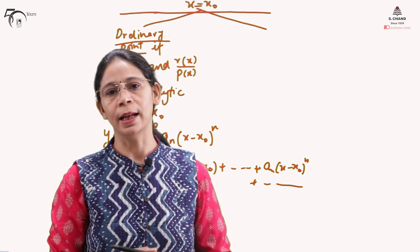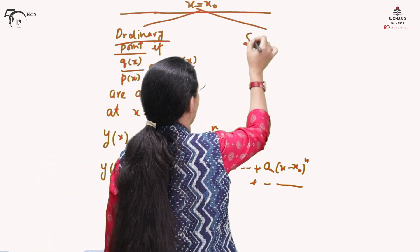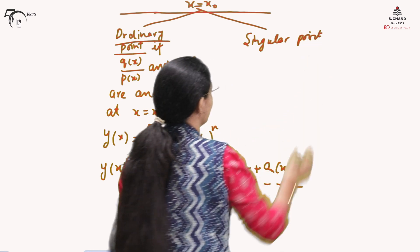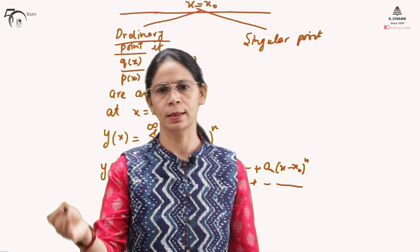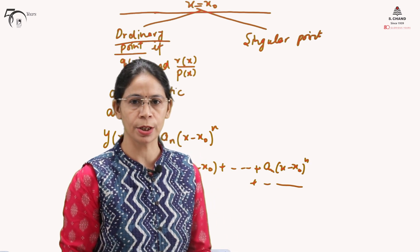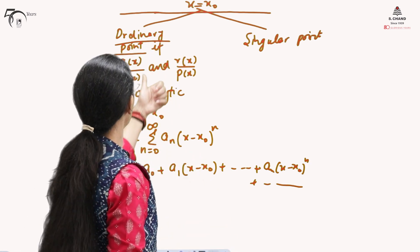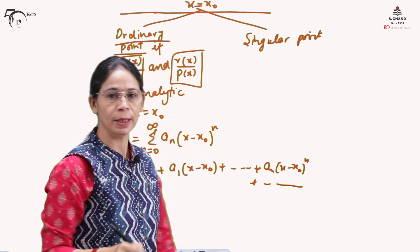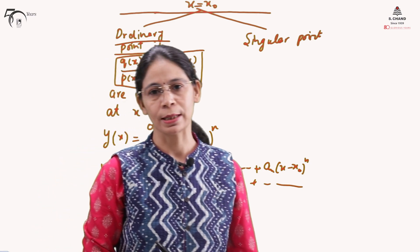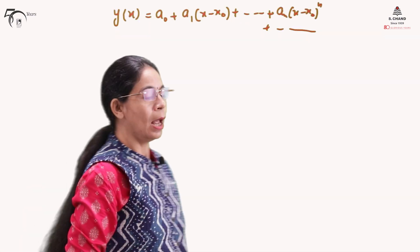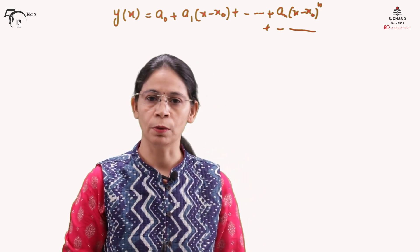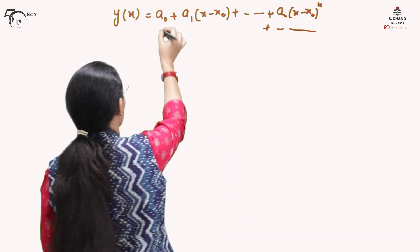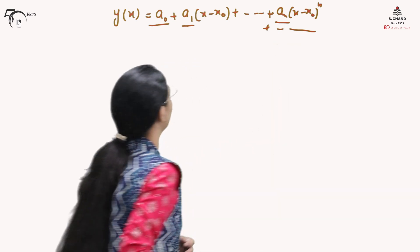If x-naught is not an ordinary point, then it is called a singular point. Singular points will be of two types, which will be discussed in forthcoming videos. Here we concentrate only on the situation when x equals to x-naught is an ordinary point, for which Q(x)/P(x) and R(x)/P(x) need to be analytic at that point. We have already assumed the solution, so what remains is to find out the values of a_0, a_1, and a_n.